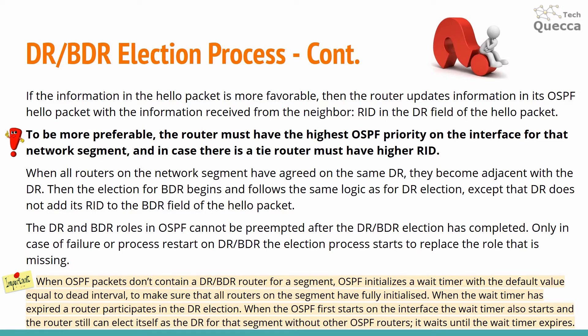If the information in a received hello packet is more favorable, the router updates its own hello packet with that information, placing the more favorable router ID in the DR field. To be preferable for DR election, a router must have the highest OSPF priority on the interface for that segment, and in case of a tie, the higher router ID wins. When all routers on the segment agree on the same DR, they become adjacent with it. Then the election for BDR begins following the same logic, except that the DR does not add its router ID to the BDR field.